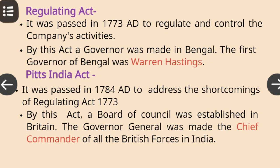Pitt's India Act: It was passed in 1784 AD to address the shortcomings of the Regulating Act of 1773. By this act, a Board of Council was established in Britain, and the governor general was made the chief commander of all the British forces in India.